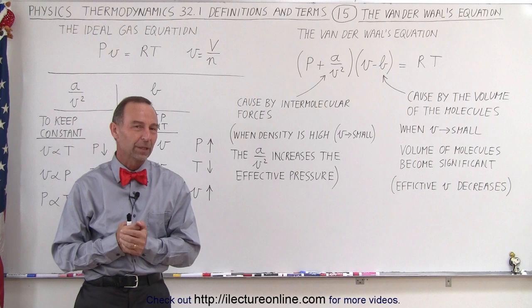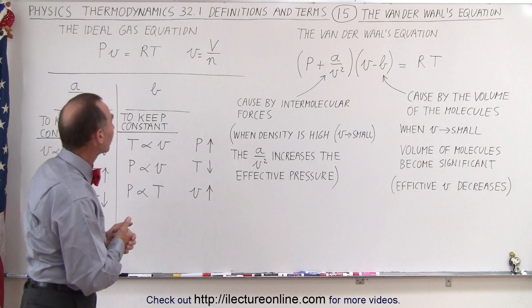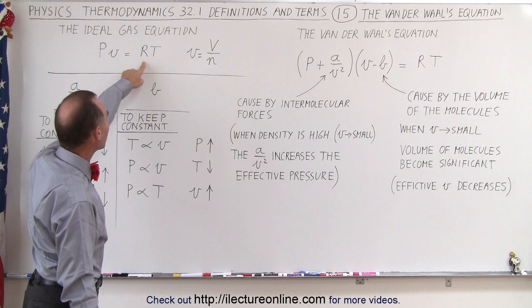Welcome to Electronline. Now let's take a look at the van der Waals equation. It turns out that under normal pressure, temperature, and volume circumstances, we can get by using what we call the ideal gas equation, where PV equals RT.